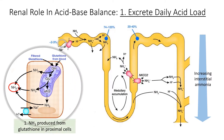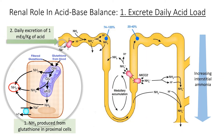The renal role in acid-base balance is to excrete the daily acid load. Ammonia is produced from glutamine in the proximal cells. There is a daily excretion of one milliequivalent per kilogram of acid into the tubules. This combines with ammonia to form ammonium.